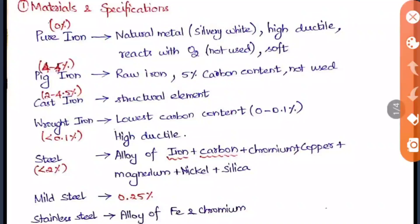Next is pig iron, which has four to five percentage carbon content. It is a raw iron and is also not used in construction. Cast iron has two to four point five percentage carbon content and is used as a structural element. Wrought iron has the lowest carbon content of zero to zero point one percentage and has very high ductility — ductile meaning the stretching behaviour of metals. Steel has less than two percentage carbon content and is an alloy of iron, carbon, chromium, copper, magnesium, nickel, silica, and others, with no defined proportions.